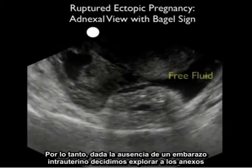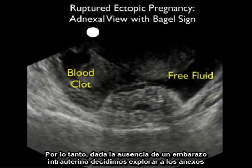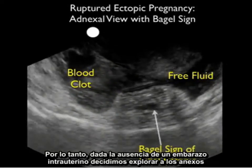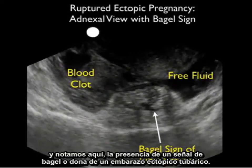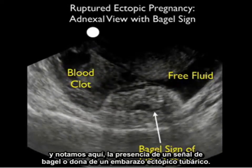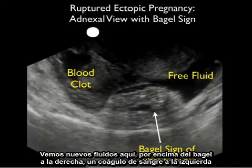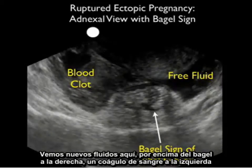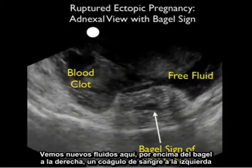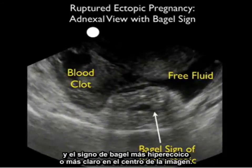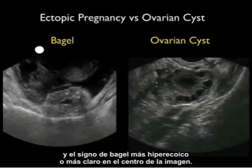Given the absence of an intrauterine pregnancy, we decided to scan out to the adnexa and notice here the presence of a bagel sign of a tubal ectopic pregnancy. We see fresh fluid here above the bagel to the right, blood clot to the left, and the more hyperechoic or lighter bagel sign in the middle of the image.